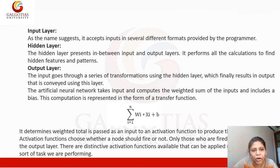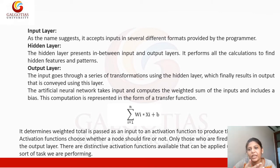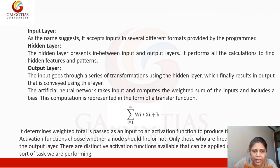Now the third is the output layer. In the output layer, the input goes through a series of transformations using the hidden layers. There can be many hidden layers. The output of the final hidden layer finally reaches the output layer, which results in the output that is conveyed using this layer.